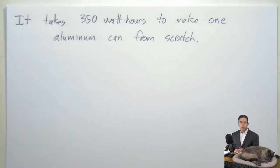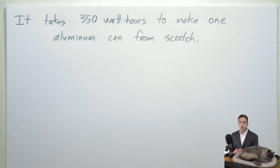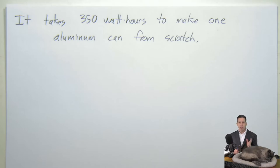If we add up the electricity it takes to make a brand new aluminum can from bauxite, it turns out it takes about 350 watt-hours of energy to make one aluminum can from scratch. If you instead recycle a can, all they have to do is melt it down — they don't have to split the aluminum-oxygen bonds — and it takes about five percent of that.